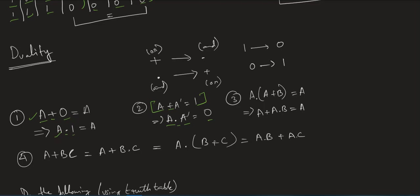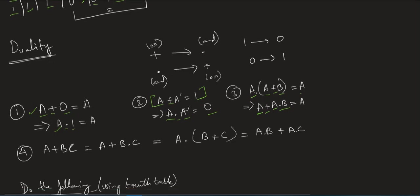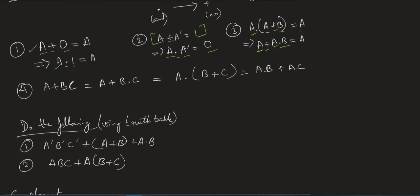In the third example, A·(A plus B) equals A. For the dual: A stays A, multiply changes to plus, A stays A, plus changes to multiply, B stays B — giving A plus (A·B) = A. In the fourth example, A plus (A plus BC) equals A plus B into C. For the dual: A stays A, plus changes to multiply, giving A·(A·B plus C), which expands to A·B plus A·C.